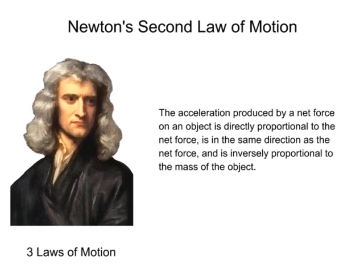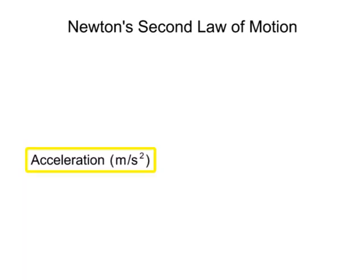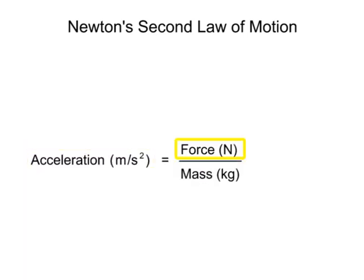Mathematically stated, a moving object's acceleration equals the net force acting upon the object divided by the mass of the object, or A equals F divided by M, where acceleration is measured in meters per second squared, force is measured in newtons, and mass is measured in kilograms.